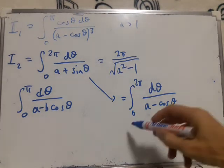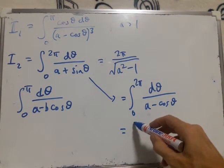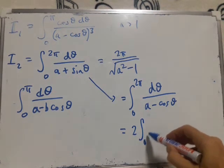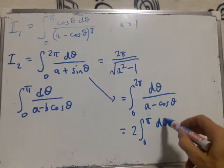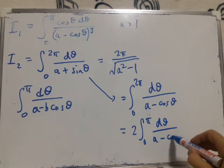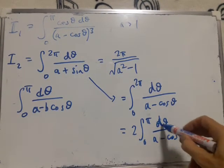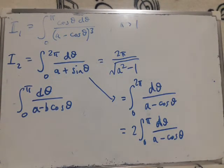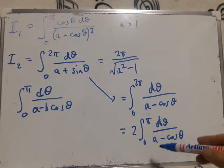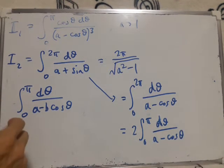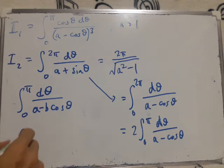Cosine of course is an even function so I can write this as two times zero to π of dθ over a minus cos θ.